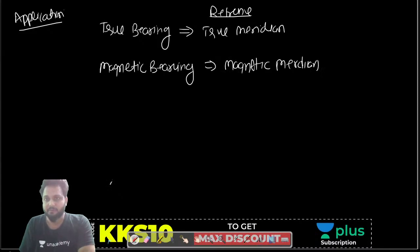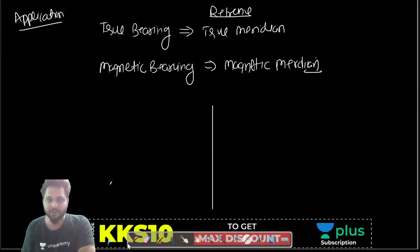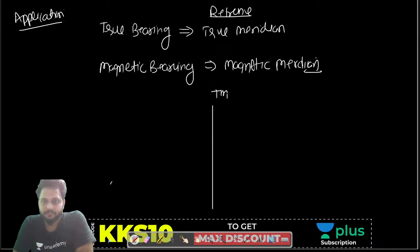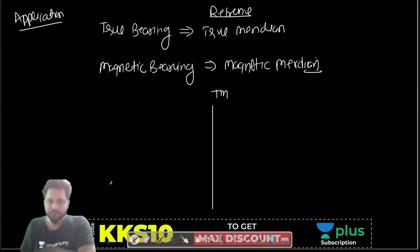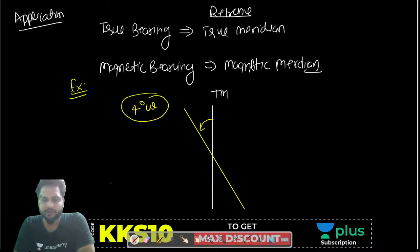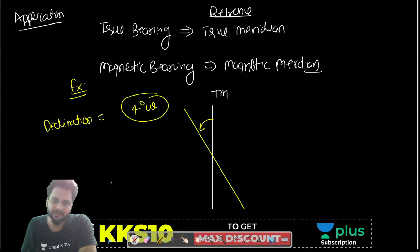The position of the true meridian does not change — true north and true south are fixed. Variations occur in the magnetic meridian. For example, consider a place where the declination is 4 degrees west. West means negative. For any line OA, if the true bearing of OA is given as 60 degrees, what will be the magnetic bearing of OA?